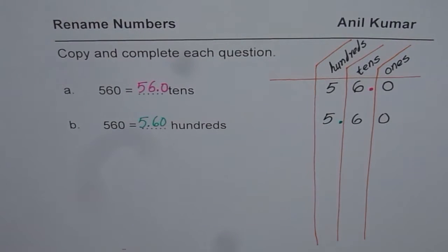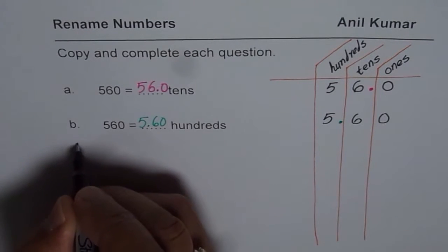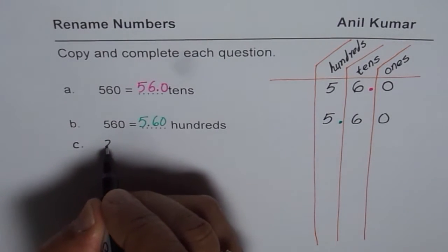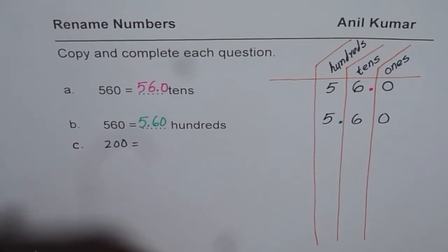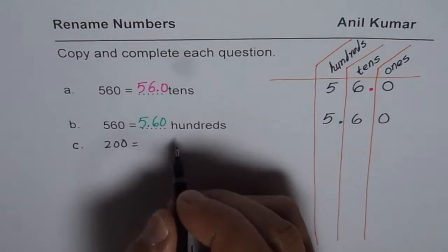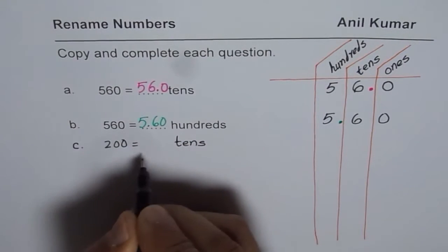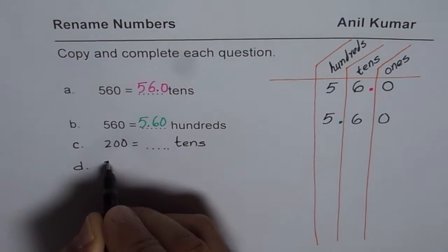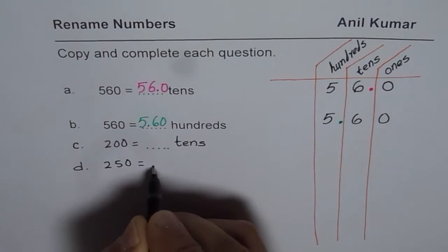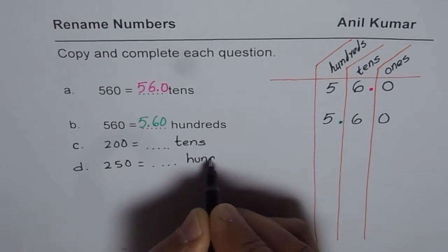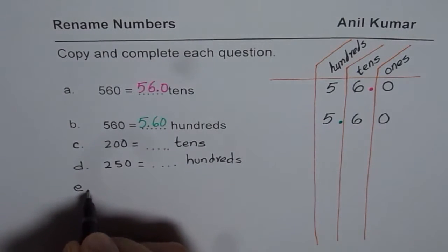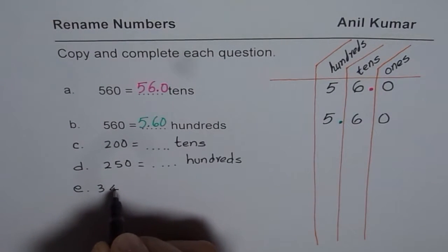Now let us practice with a few more examples. So I am going to write down a few examples. You need to copy and correctly rename them. So 200, write them as tens. So 200 is how many tens? Then let us take a number 250. Write 250 as hundreds.